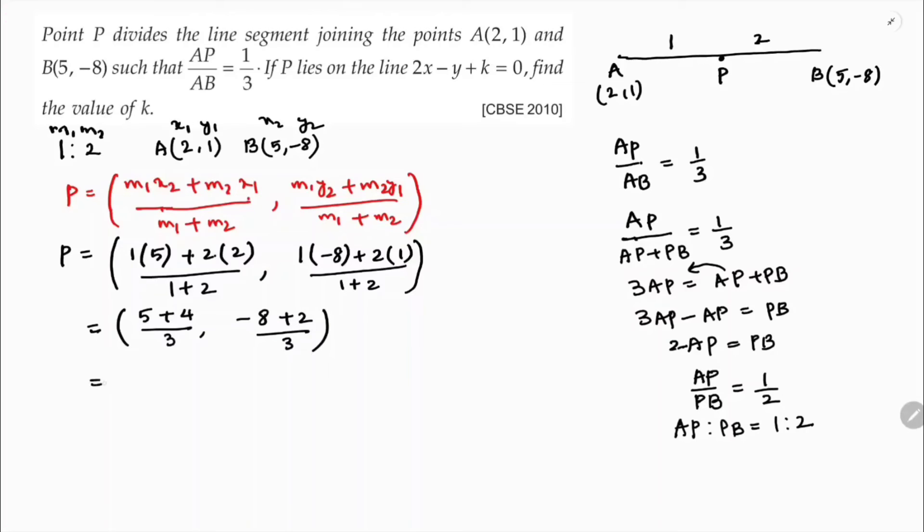This is nothing but 9 by 3 minus 6 by 3. The line is 2x minus y plus k equals 0 and the point is 3 comma minus 2.